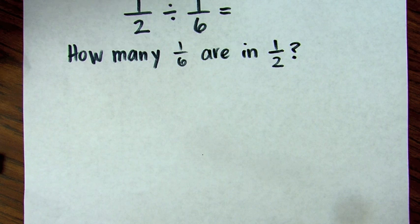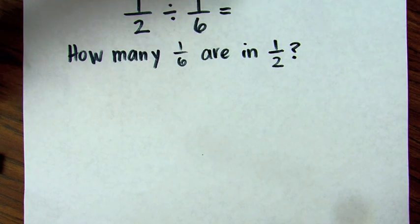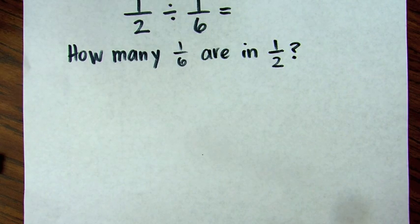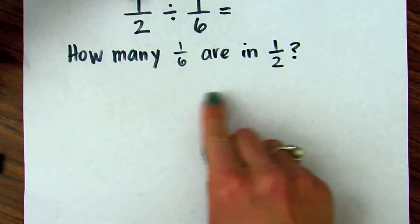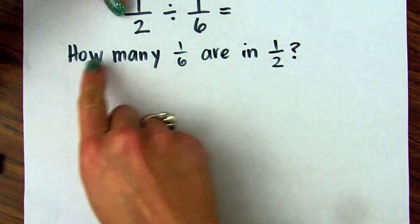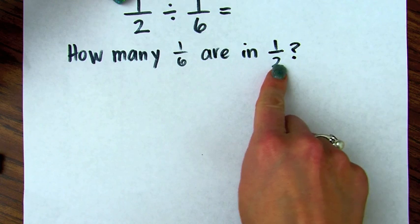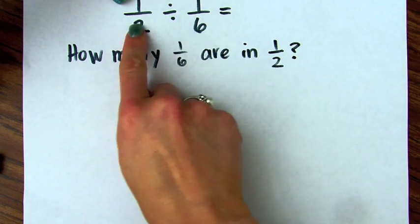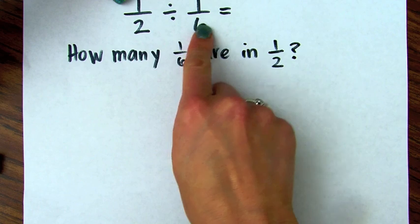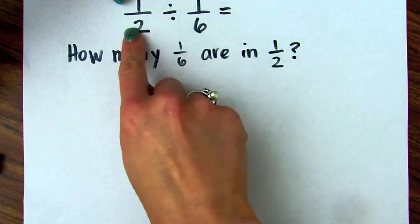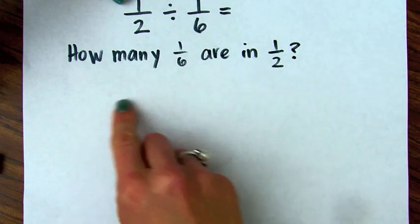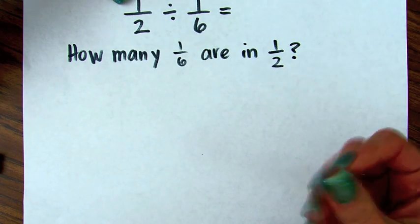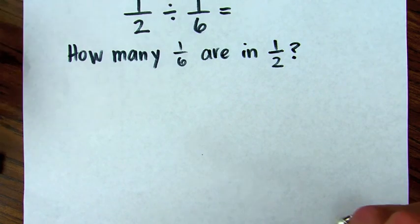Now we're going to show you how to divide fractions using these Legos. We're going to divide one-half divided by one-sixth. The important thing when you want to show division of fractions conceptually is that you should always word it as: how many sixths are in a half? Think of it like fifteen divided by three — you would say how many threes are in fifteen. It's important to word it this way so students get a good conceptual understanding.